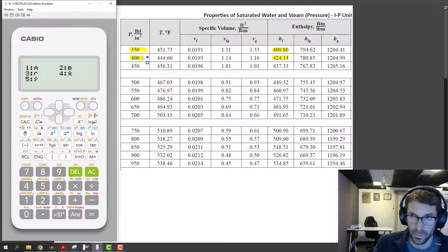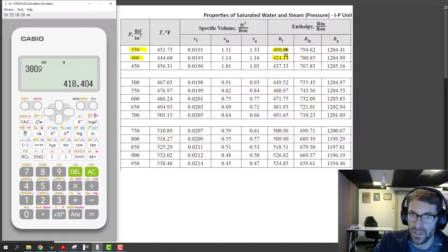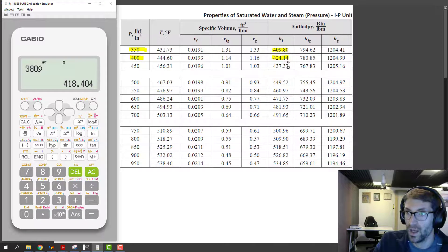We want to know the y value that goes with that, so 5 again and then hit equals, and we get 418.4, which is closer to 424 than it is to 409, so I'll buy it. And that's how you interpolate on the calculator.